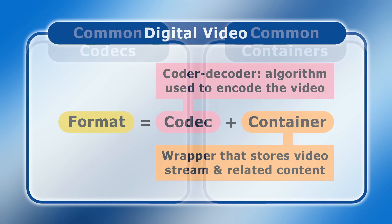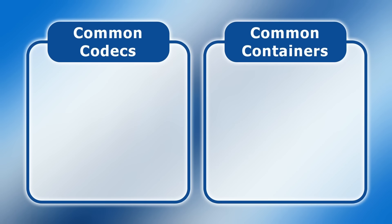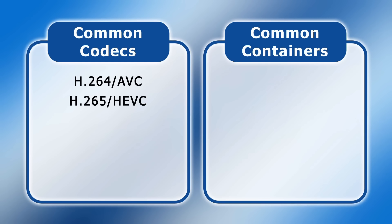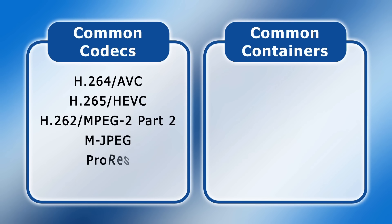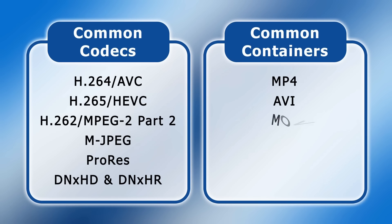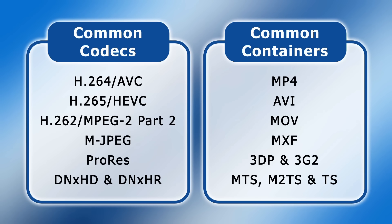Today, a great many video codecs and containers are in use. Common codecs include H.264 also known as AVC, H.265 also known as HEVC, H.262 also known as MPEG-2 Part 2, MJPEG, ProRes, DNxHD and DNxHR. Common containers include MP4, AVI, MOV, MXF, 3GP and 3G2, and MTS, M2TS and TS. There are many other digital video codecs and containers, but the ones listed are those I'll explain in more detail later in this video.